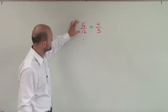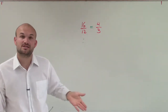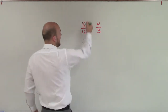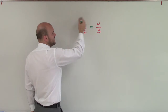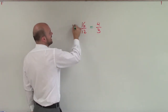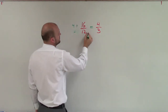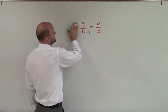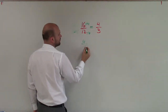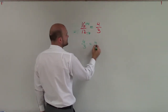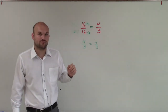When I take a look at 16 over 12, I say, how can I reduce that? What values do 16 and 12 share that I can simplify? Well, you can see that they both share a 4. So if I divide by 4 on the top and the bottom, you can see that I get 4 over 3, which is equivalent to 4 over 3. Therefore, these two fractions do form a proportion.